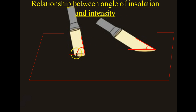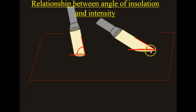If we hold that same flashlight at a lower degree, then we see the ray spreads out a little bit. The circle is a little greater — it covers a wider area, but it is less intense at that point.